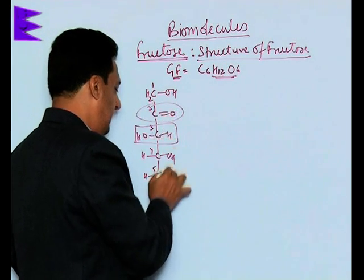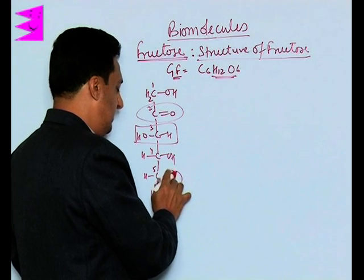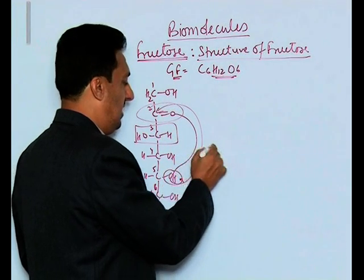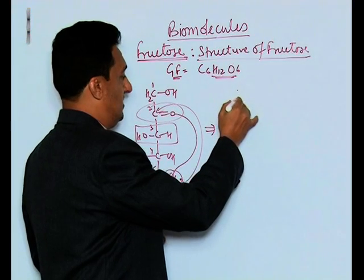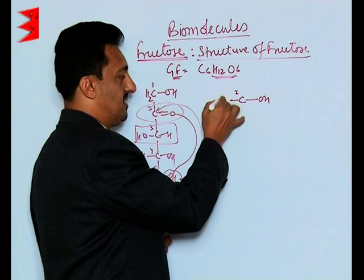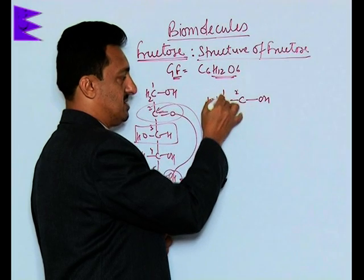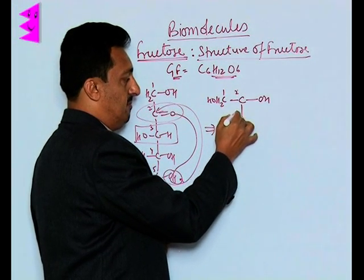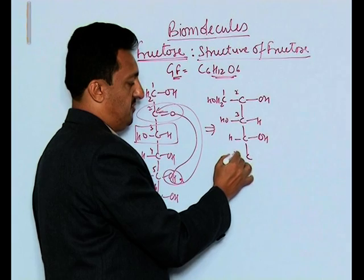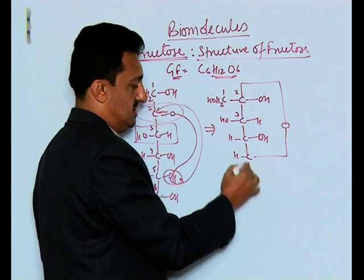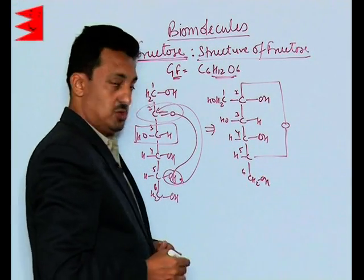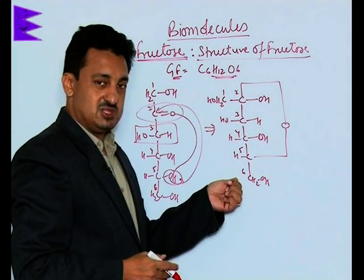The ring forms when the ketonic group on the second carbon reacts with the OH group of the fifth carbon. The oxygen attacks the carbon and the H goes with the oxygen. The second carbon's double-bonded oxygen is converted into an OH group, and carbon one retains the CH2OH group. Carbon three has the HO group on the left hand side, carbon four has the OH group on the right hand side, and carbon five is attached to carbon two through an oxygen.